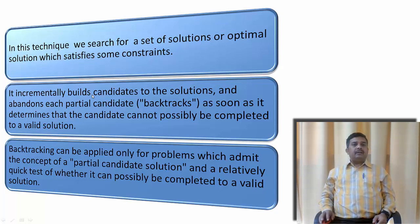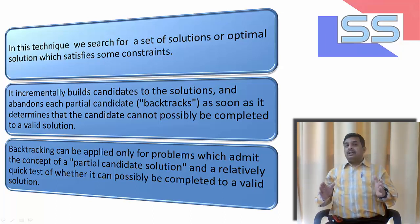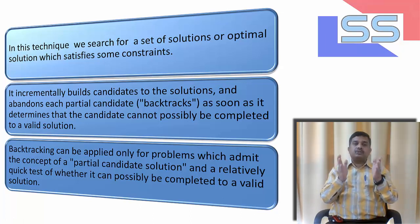It incrementally builds the candidate to the solution and abandons each partial candidate or we are saying it backtracked as soon as it determines that the candidate cannot possibly be completed to a valid solution. And backtracking can be applied only for a problem which admits the concept of partial candidate solution and relatively quick test of whether it can possibly be completed to a valid solution.